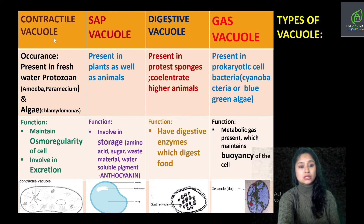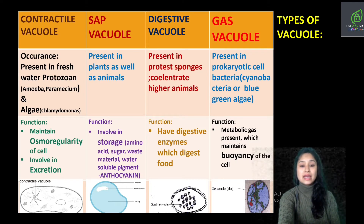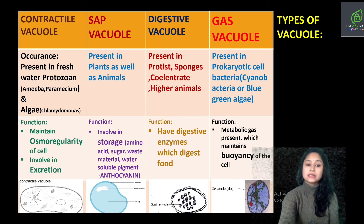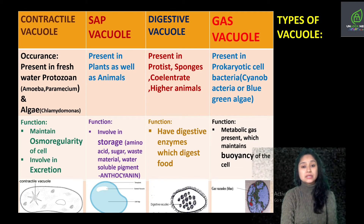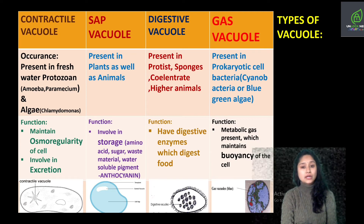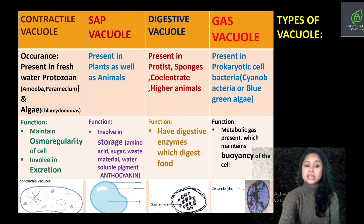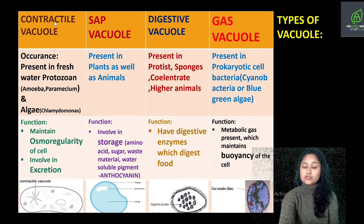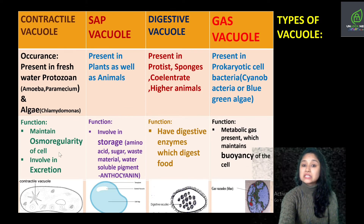The very first is contractile vacuoles. They basically occur in freshwater protozoa like amoeba, paramecium, and algae — they are present in Chlamydomonas. Talking about the function of contractile vacuoles, they maintain osmoregularity of the cell. Osmoregularity means they maintain the osmotic pressure in the fluid of the organism by controlling salt and water concentration. They are also involved in excretion.